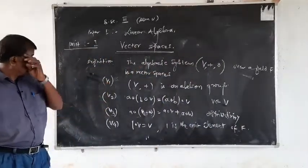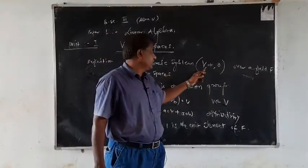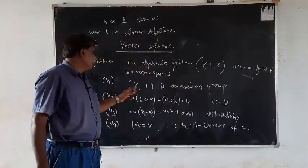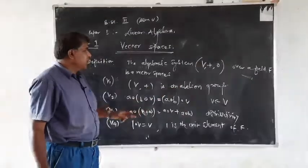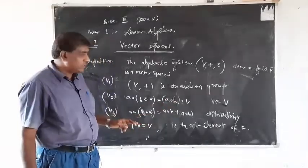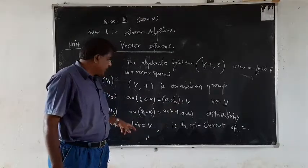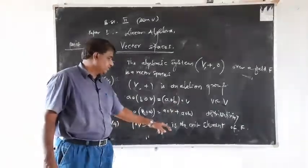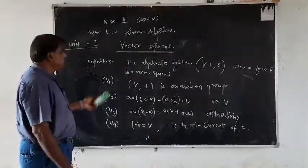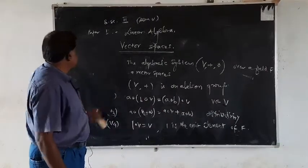Using this definition, the vector space V over addition and multiplication satisfies: V under addition is an abelian group, the property of associativity, the property of distributivity, and the unit element property 1·V = V where 1 is the unit element of F. Using this concept of a vector space, we prove a certain theorem.